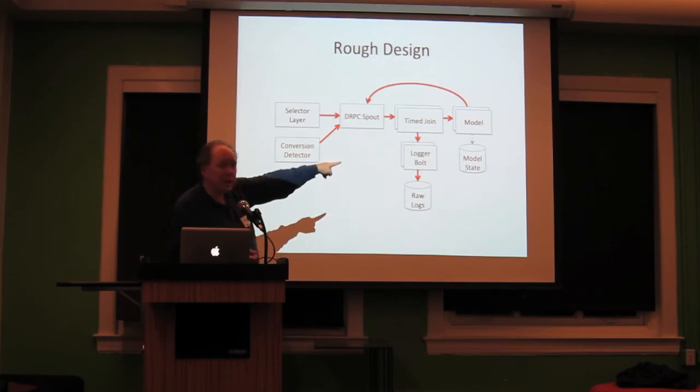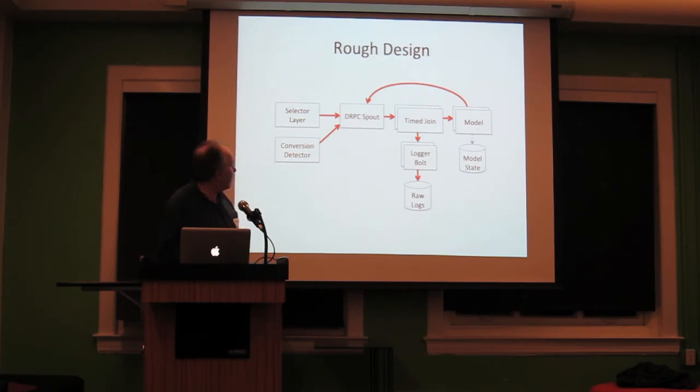The model, of course, then persists occasionally in state and it acknowledges things so that we know we're done with those. Now the DRPC spout in this case can be adjusted so it does not actually need to retransmit things. If things time out, too bad. See ya. We'll be back. And of course, we want to log a fair bit of data into raw things.